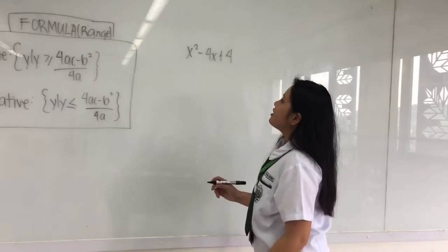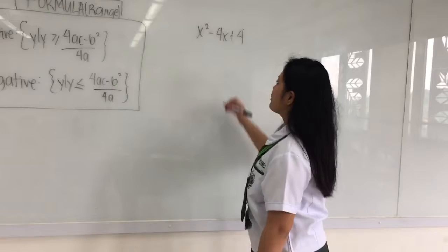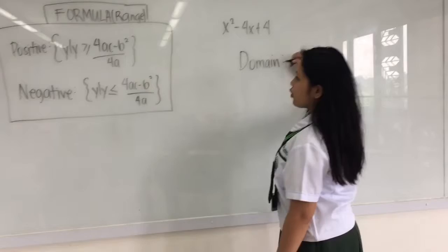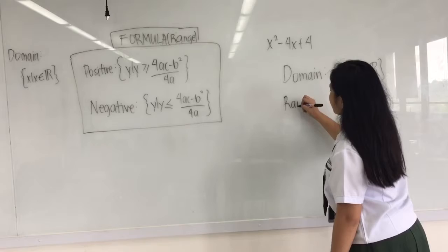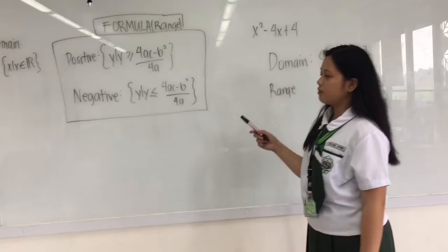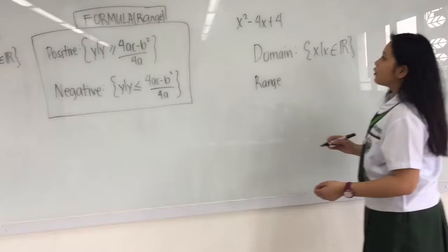So the given is x squared minus 4x plus 4, and we will be finding the domain and the range. The domain is given already, which is x such that x is equal to any real number. And then for the range, our given is positive, so we will be using the positive formula and we will be solving it.